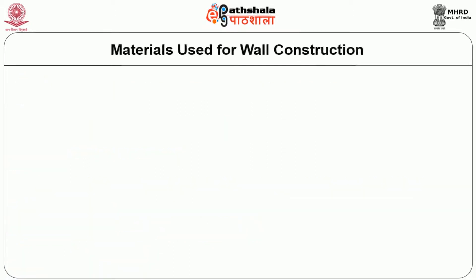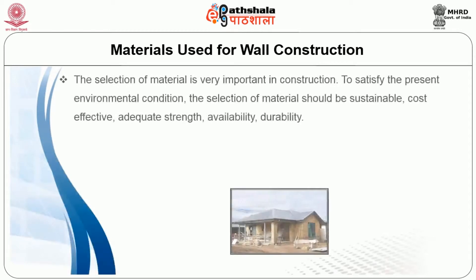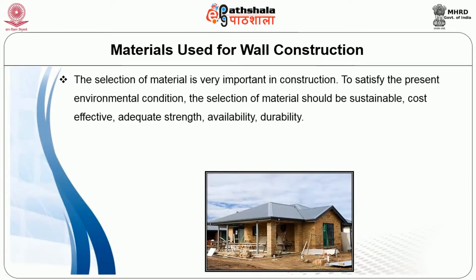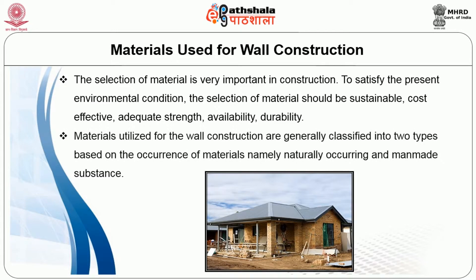Next we will see what materials are used for wall construction. The selection of material is very important in construction. To satisfy present environmental conditions, the selection of material should be sustainable, cost-effective, of adequate strength, availability, and durability. Materials utilized for wall construction are generally classified into two types based on their occurrence: naturally occurring and man-made substances.